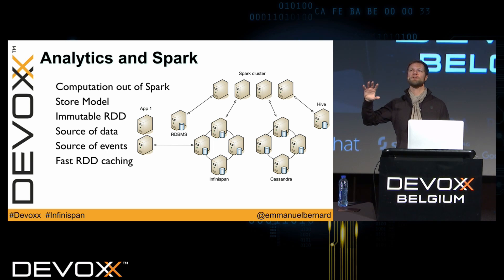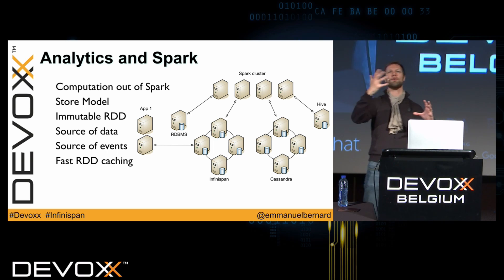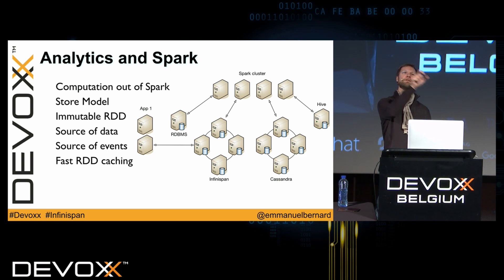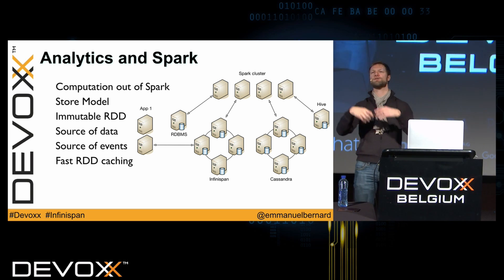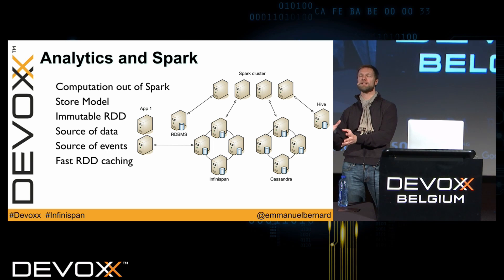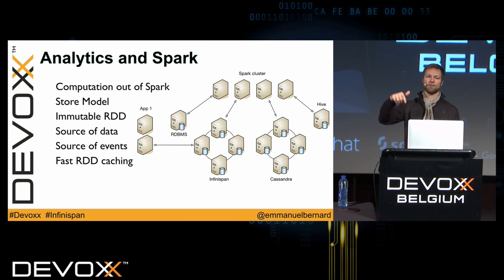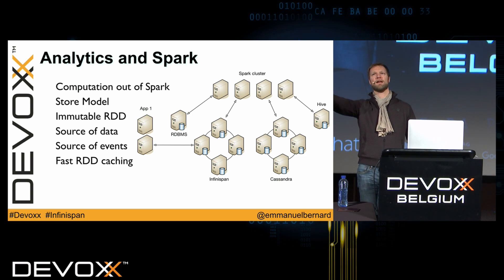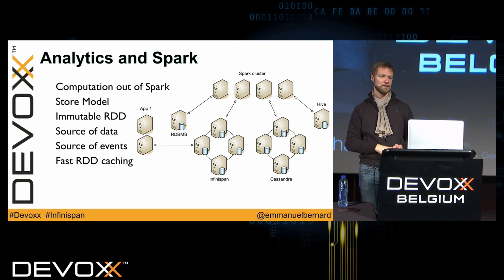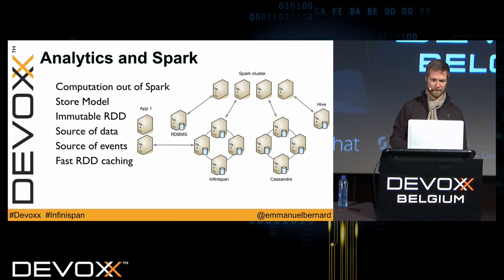Infinispan is also a source of events. In Spark there are two models: run computation on a batch data set, or run computation on a stream of change events — using the same model and API. When you put something into Infinispan, it can be transformed into a Spark DStream and trigger Spark to do computation. So you could have real-time analytics based on Infinispan data changes.